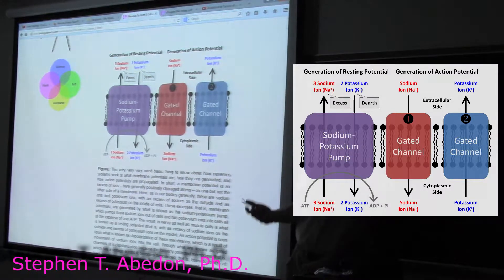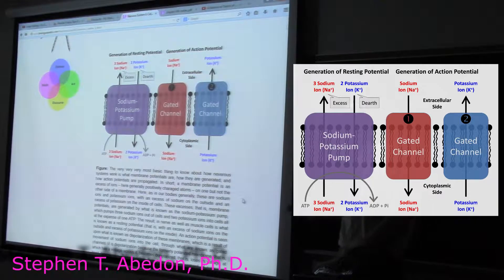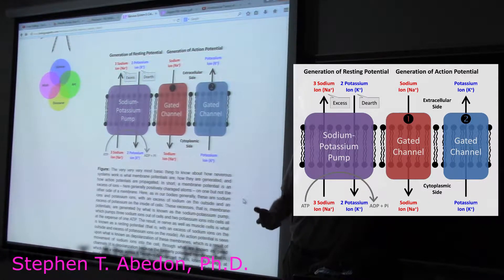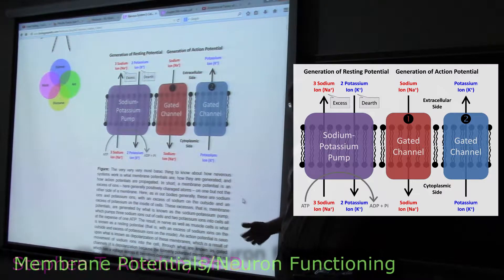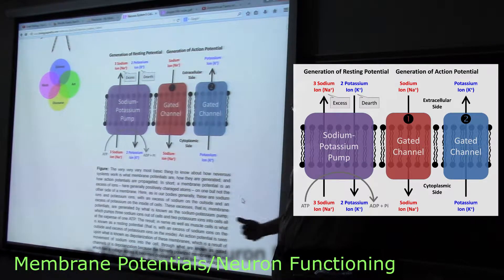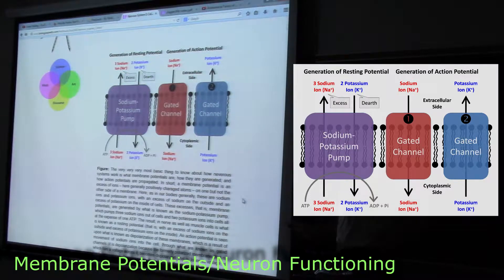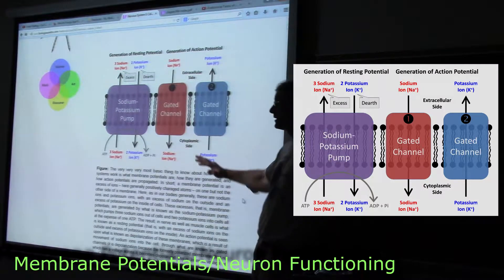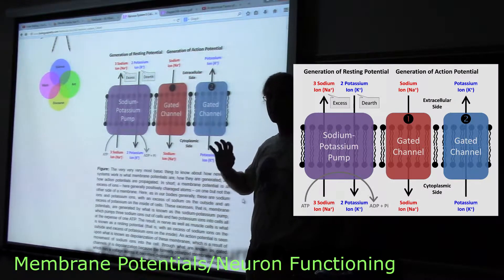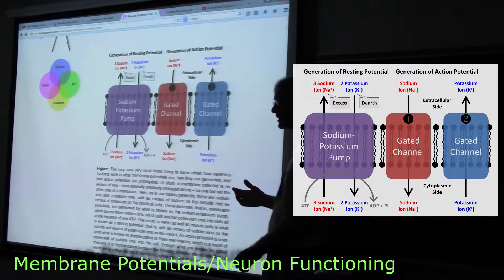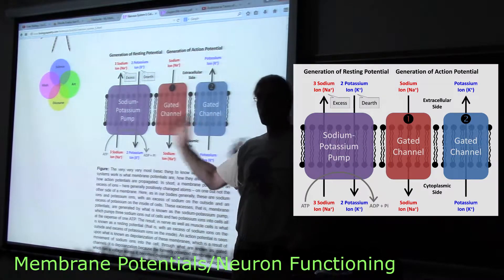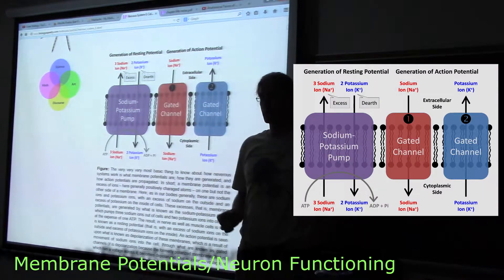This is also applicable to how muscles work. When we talked about the nerve impulse or action potential propagating along the sarcolemma and down the transverse tubules, we're talking about the same concept here. This is the key to understanding how you can send a signal from one end of a cell to another end of a cell.